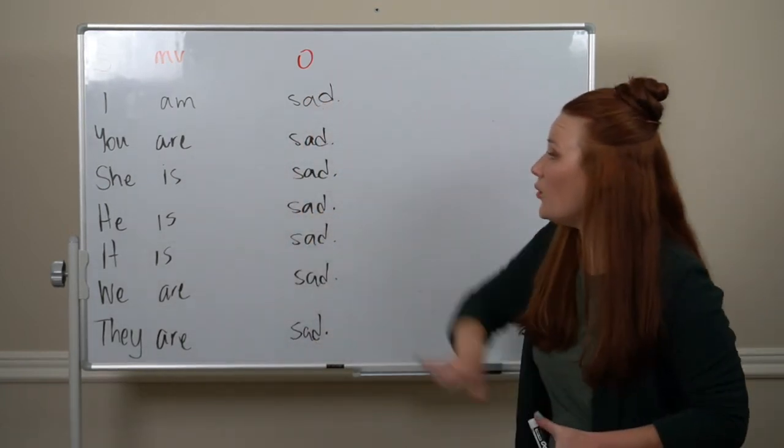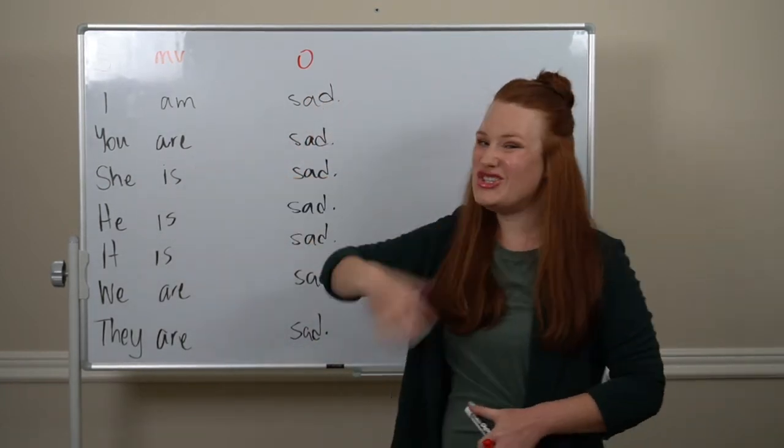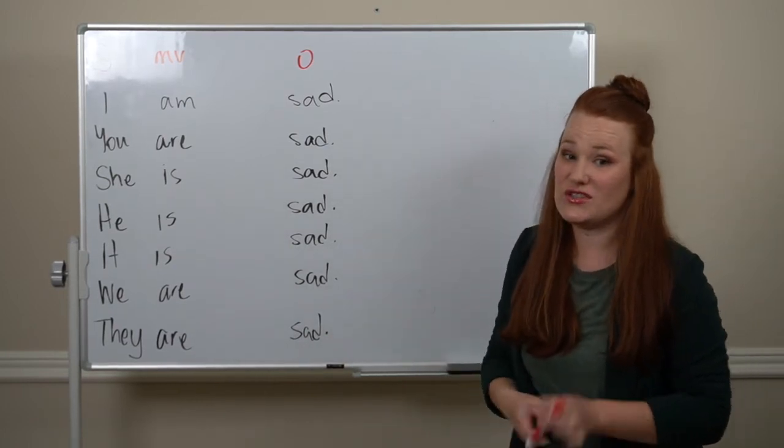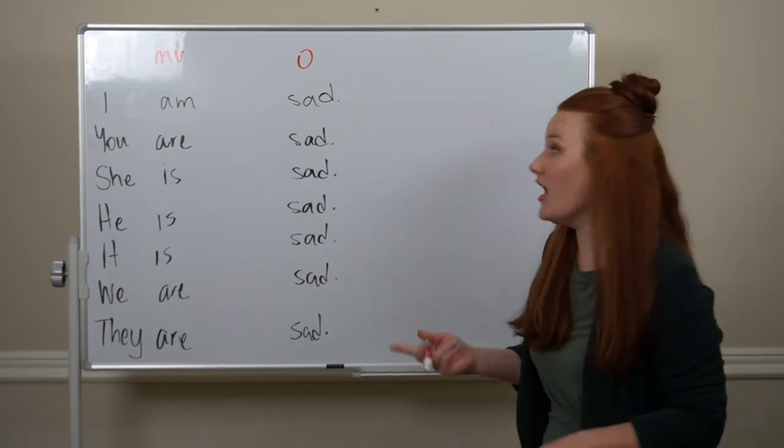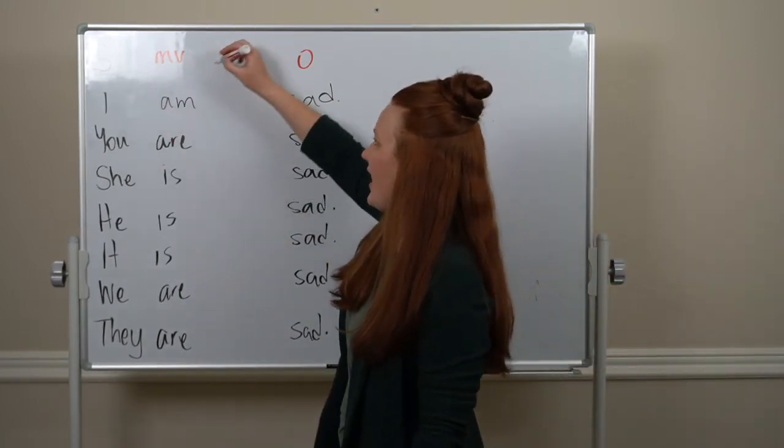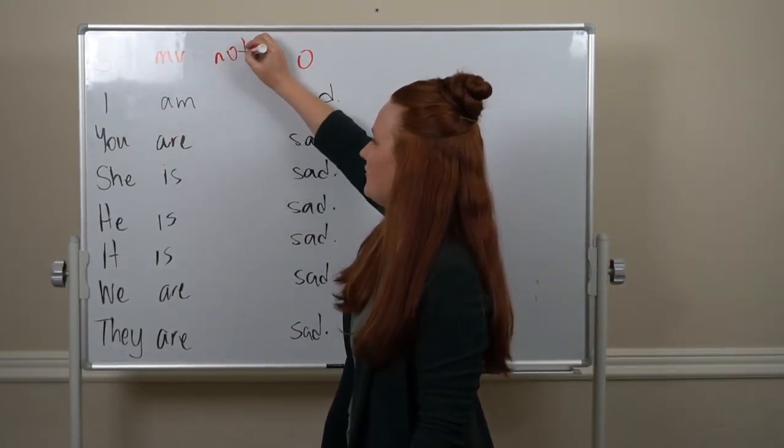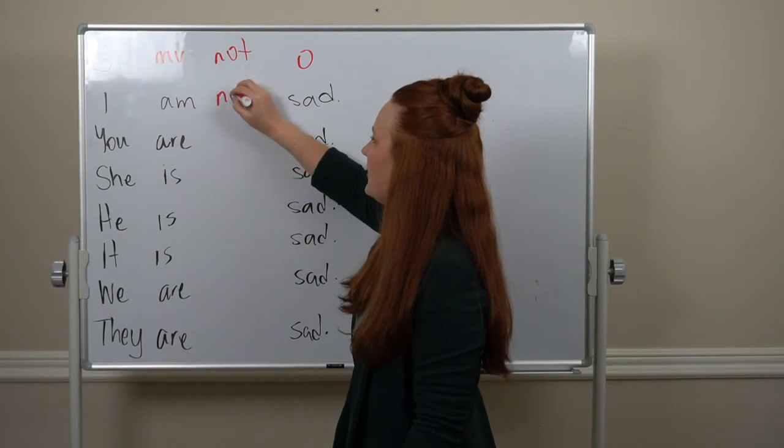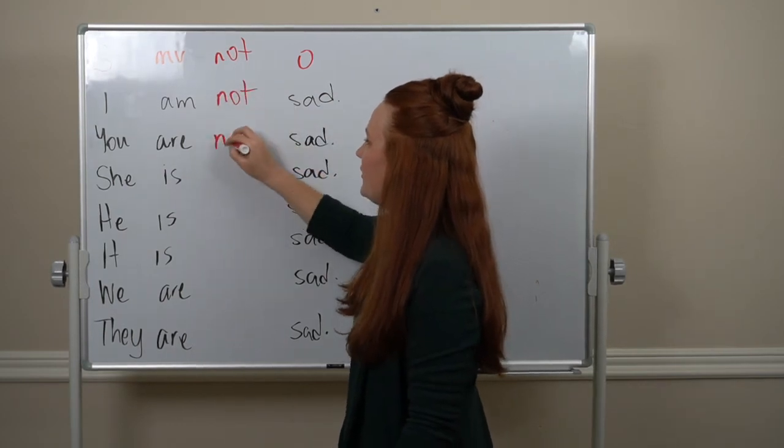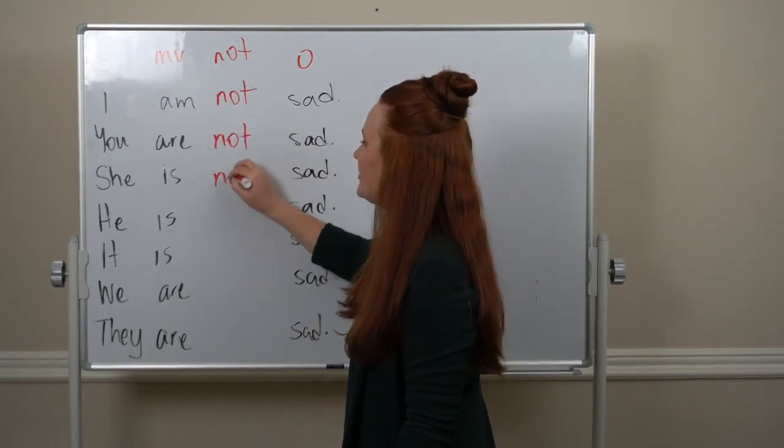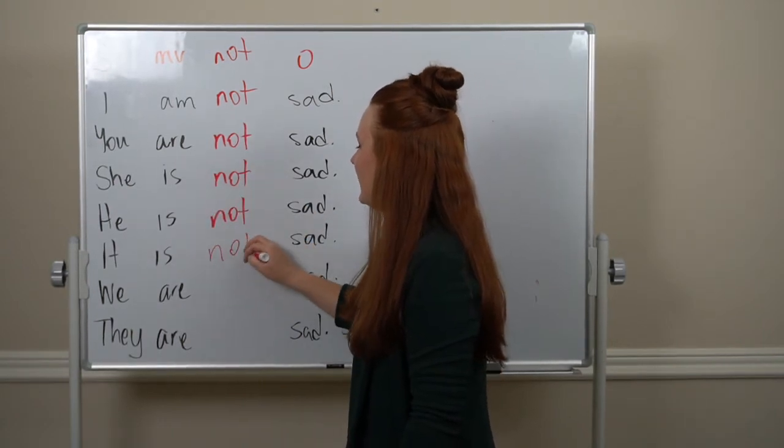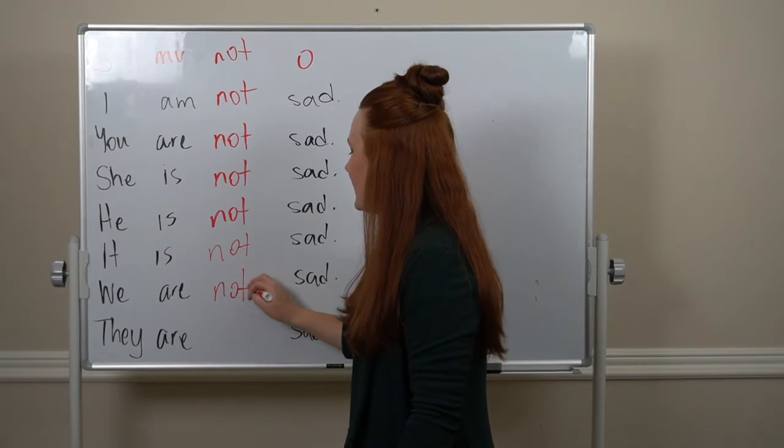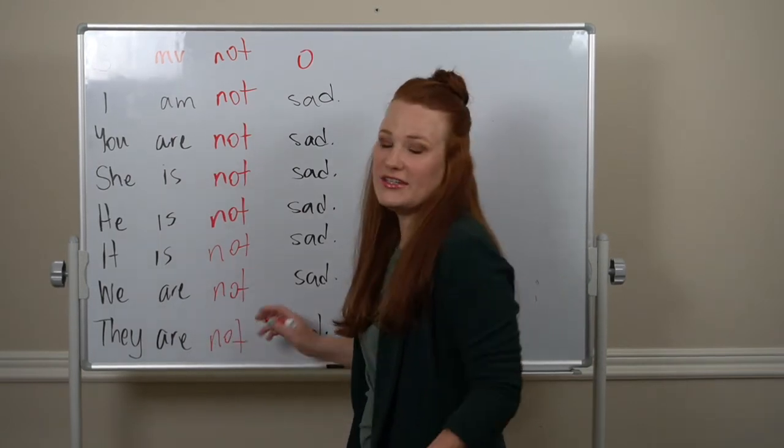With 'to be', we don't need to use an auxiliary verb. We just need 'not', and it comes after the main verb. I am not sad. You are not sad. She is not sad. He is not sad. It is not sad. We are not sad. And they are not sad.